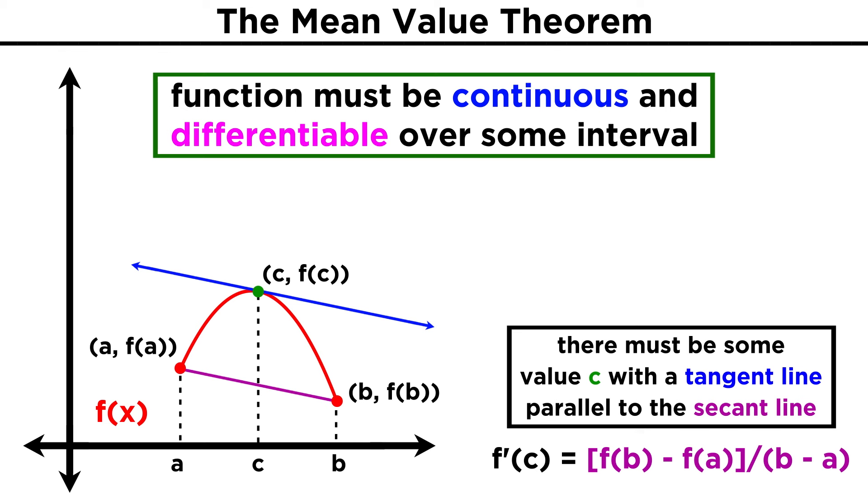In other words, there must be at least one point on the curve that has a tangent line that is parallel to the secant line. Here we see one such point, because the curve has only one concavity.